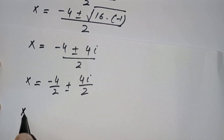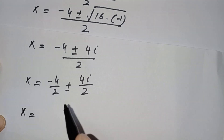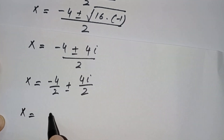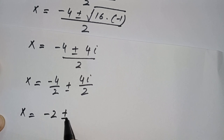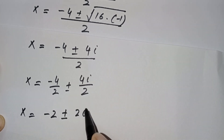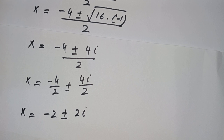Dividing through by 2, x = −2 ± 2i. So we have two complex solutions: x = −2 + 2i and x = −2 − 2i.